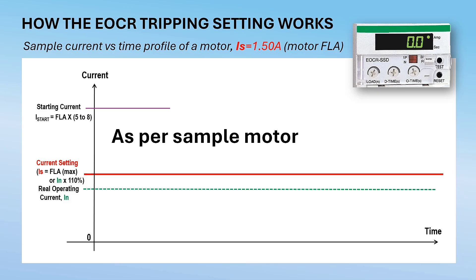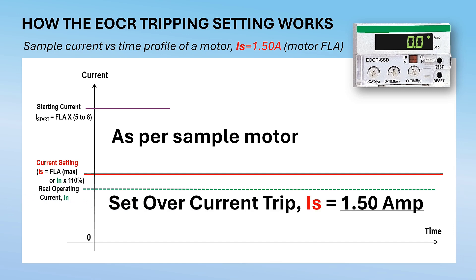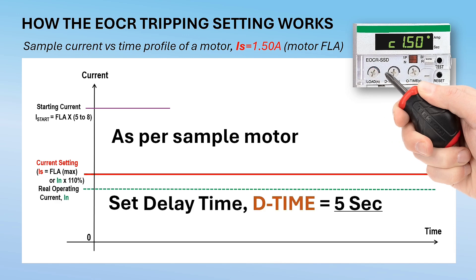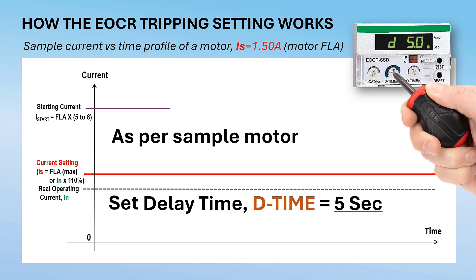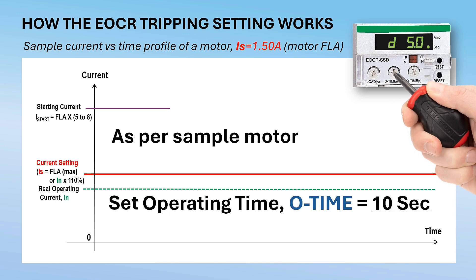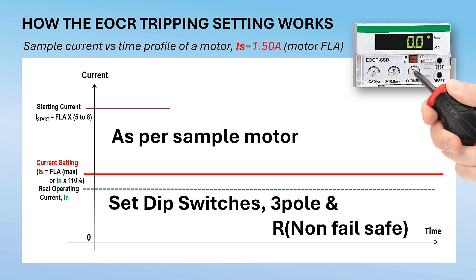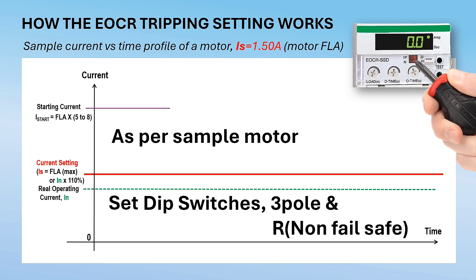After collecting the information about the motor FLA, we can now set the parameters in the EOCR. Set the overcurrent trip by turning the load setting knob clockwise until reaching the desired set value — the display will show an increment of 0.10 ampere for each step. Next, set the delay time or D-time to five seconds. Next, set the operating time or O-time to 10 seconds. Then set the dip switch as per your system requirements for single-phase or three-phase, and fail-safe or non-fail-safe as per your application.